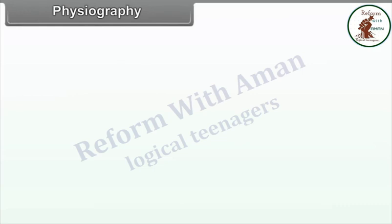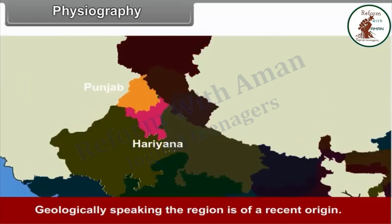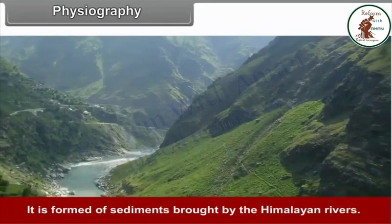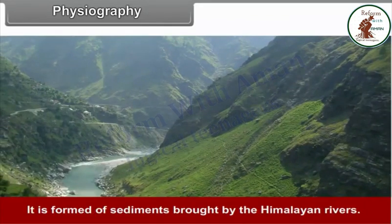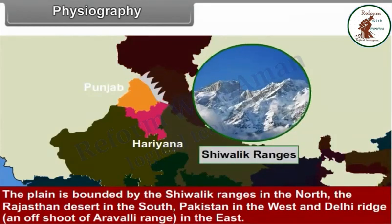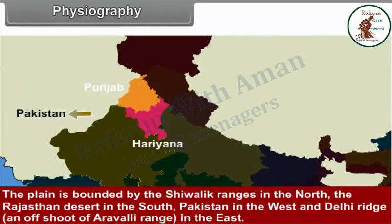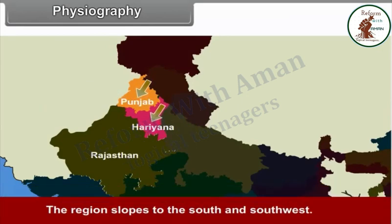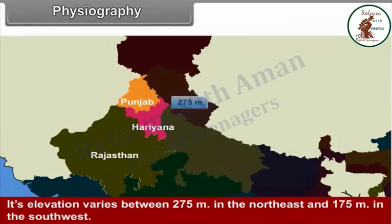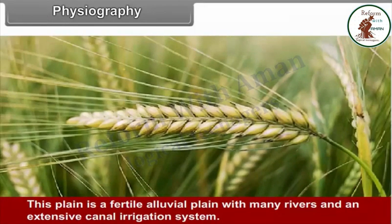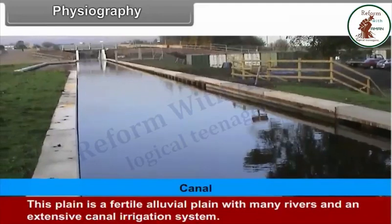4.1 Physiography. Geologically speaking, the region is of recent origin. It is formed of sediments brought by the Himalayan rivers. The plain is bounded by the Shivalik range in the north, the Rajasthan desert in the south, Pakistan in the west and Delhi Ridge in the east. The region slopes to the south and south-west. Its elevation varies between 275 meters in the north-east and 175 meters in the south-west. This plain is a fertile alluvial plain with many rivers and an extensive canal irrigation system.